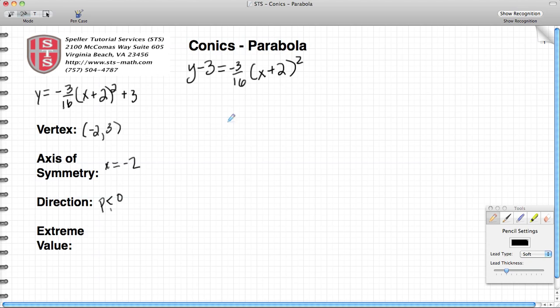Because P is less than 0, in this case that is negative 3 sixteenths, and that's going to create a parabola that generally looks like this.